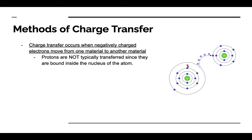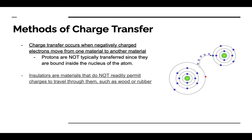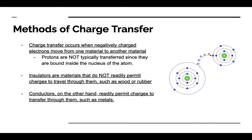Protons are not typically transferred since they are bound inside the nucleus of an atom, so it is mainly electrons that are transferred from one atom to another. Insulators are materials that do not readily permit charges to travel through them, such as wood or rubber. Conductors, on the other hand, readily permit charges to flow through them, such as metals — which is why we use metals in computers and technology, because they conduct electricity well.